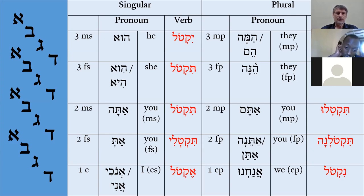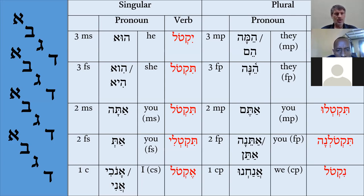The basic form is Yiqtol — the third masculine singular. Yiqtol means 'he will kill,' since katal means 'to kill.' Tiqtol is the third feminine singular meaning 'she will kill.' Pay attention that Tiqtol and Tiqtol — 'she will kill' and 'you masculine singular will kill' — have the same form; only context will help identify which is implied. Tiqtoli is 'you feminine singular will kill,' and Eqtol is 'I will kill' — first common singular.